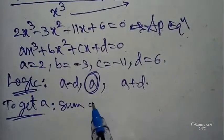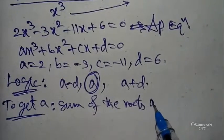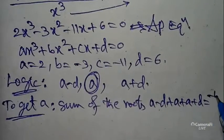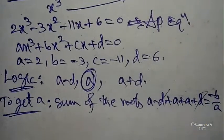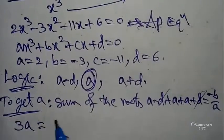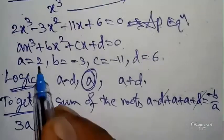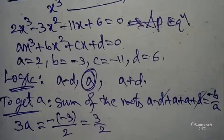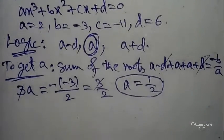To get the value of a, use the sum of roots: (a minus d) plus a plus (a plus d) equals minus b by a. The ±d cancels, leaving 3a equals minus(minus 3) by 2, which is 3 by 2. So 3a equals 3/2, and therefore a equals 1/2.